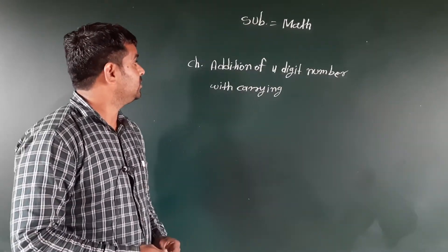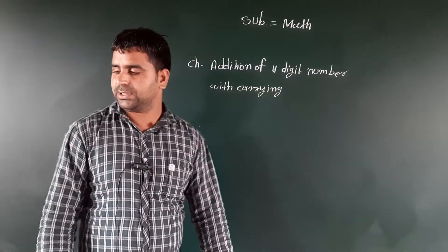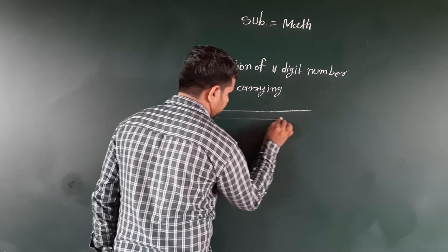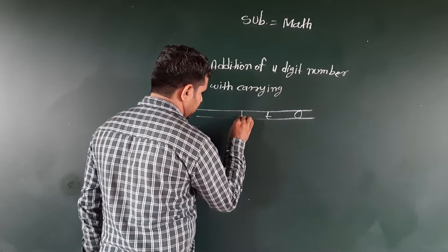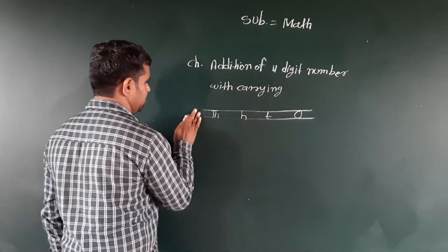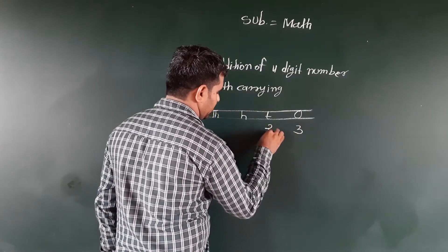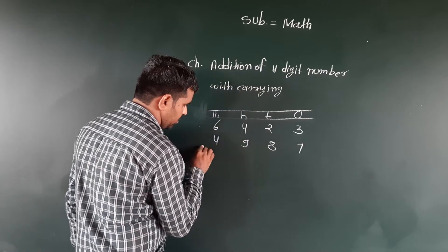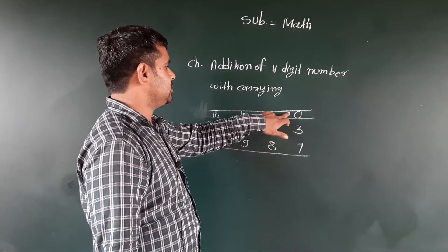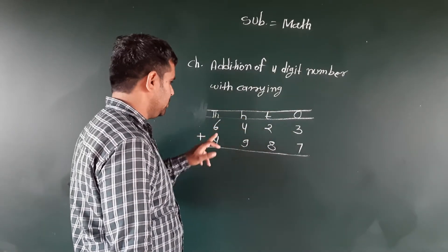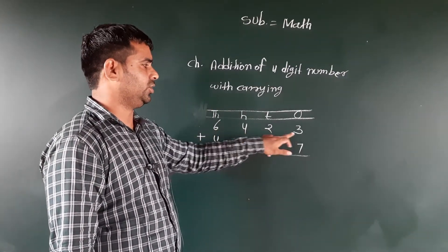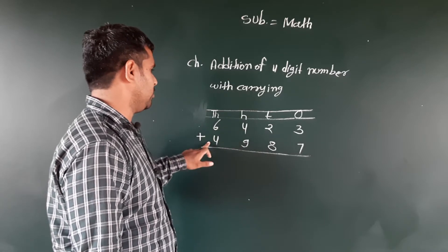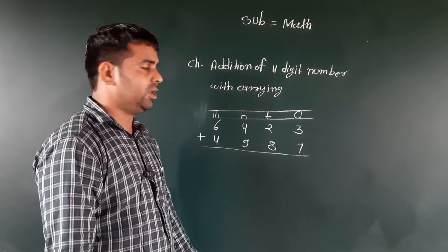Last day we did addition of three-digit numbers with carry. Now, ones, tens, hundreds, thousands. First number: three, two, four, six — that is six thousand four hundred and twenty-three. Plus: ones seven, tens eight, hundreds nine, thousands four — nine hundred and eighty-seven... wait, four thousand nine hundred and eighty-seven. How much is six thousand four hundred and twenty-three plus four thousand nine hundred and eighty-seven? Let's solve.